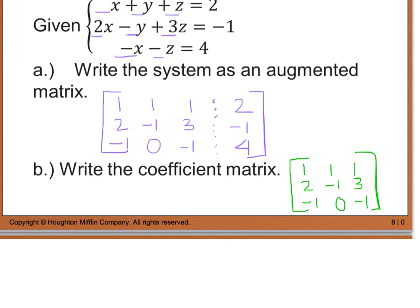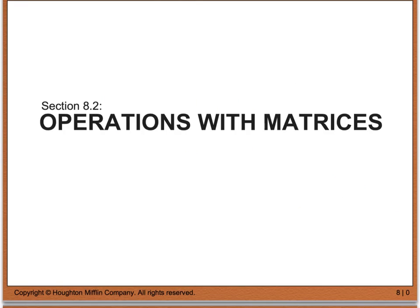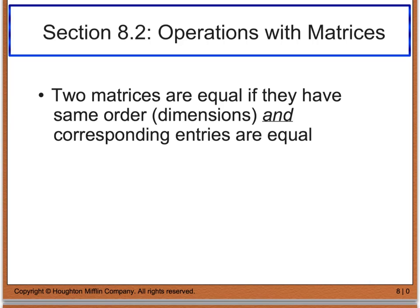This concludes what we need to cover from section 8.1 for now — we'll come back to the rest after the MME and ACT. Now let's look at section 8.2, which deals with operations on matrices. Two matrices are equal if and only if they have the same order or dimensions, such as 3 by 3 or 2 by 4, and they must have corresponding entries that are equal.